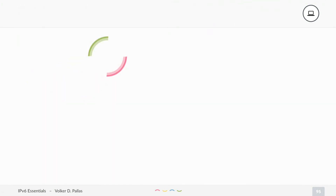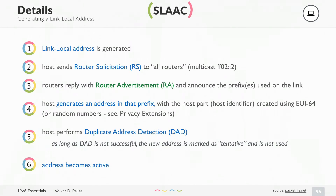How do you generate your own IP address if you don't have DHCP? Well, first you generate the link-local address. You can use EUI-64 or you can use privacy extensions, but it always starts with FE80 and it's in the scope of slash 64.